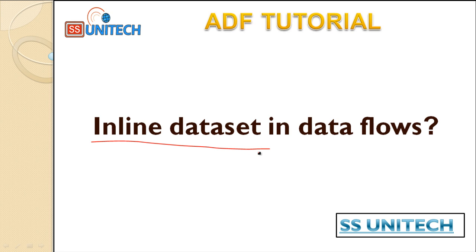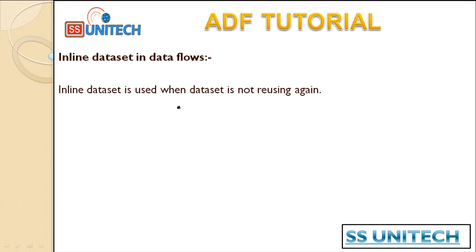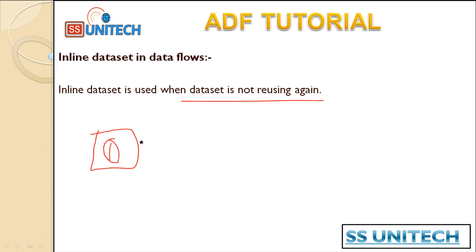The inline dataset is used when a dataset is not going to be reused. We have already created multiple datasets — for example, an employee dataset that we use in multiple pipelines and multiple data flows. But if we have a requirement to use a dataset only a single time and we are not going to use it again, we can use the inline dataset option.